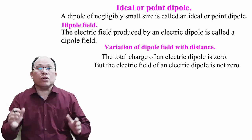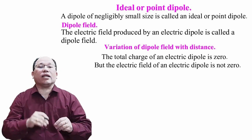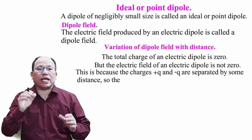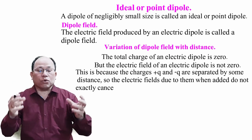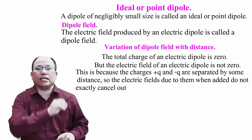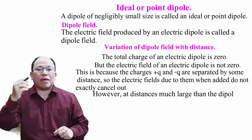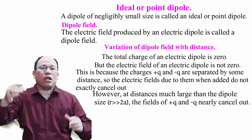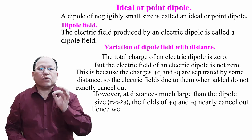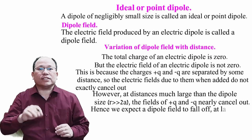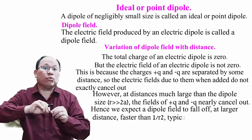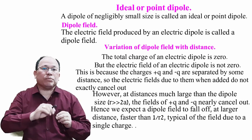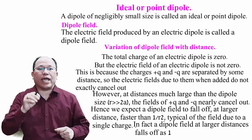But the electric field of an electric dipole is not zero, even though the total charge is zero. This is because the charges +q and −q are separated by some distance, so their electric fields when added do not exactly cancel out. However, at large distances — much larger than the dipole size, i.e., r >> 2a — the fields of +q and −q nearly cancel out. Hence, we expect a dipole field to fall off at large distances faster than 1/r². In fact, a dipole field at large distances falls off as 1/r³.